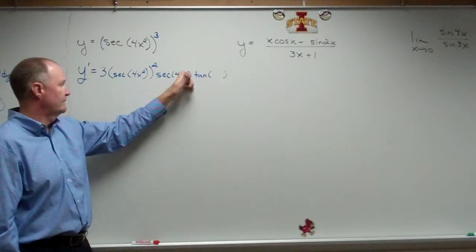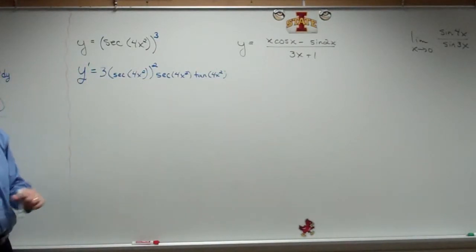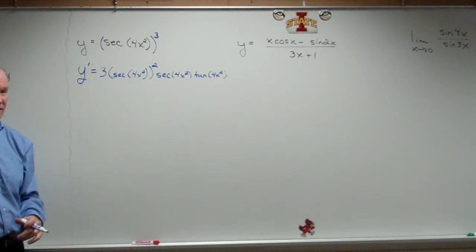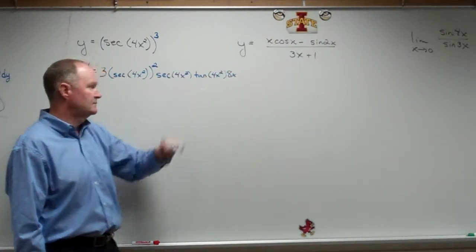You'll never change it unless you use your gold sheet for some reason. And now I have 4x squared. The derivative of that, 8x. And you're done.